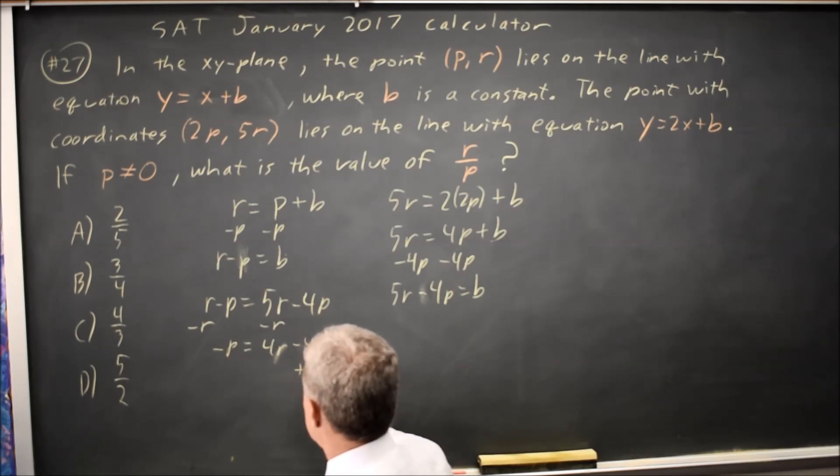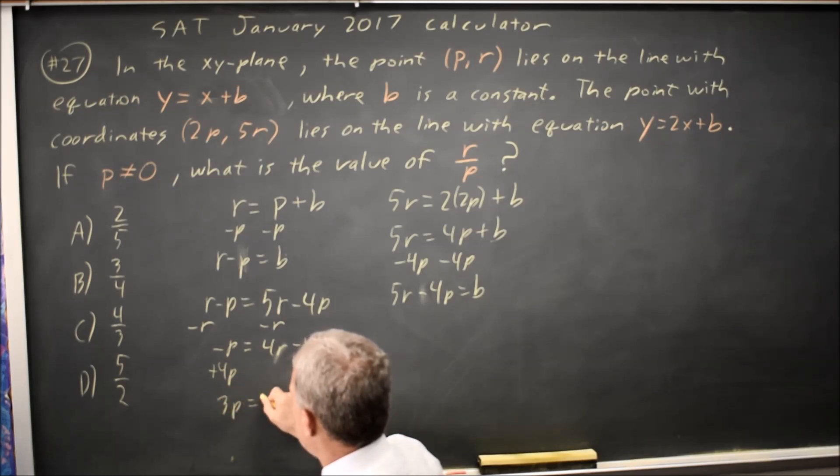Add 4p to both sides. Negative p plus 4p is 3p equals 4r.